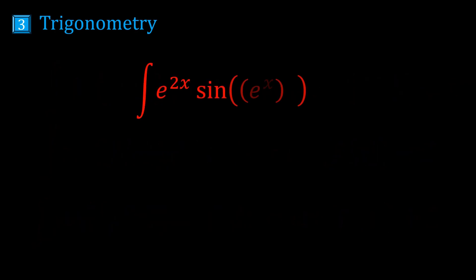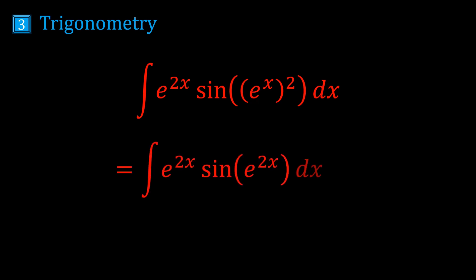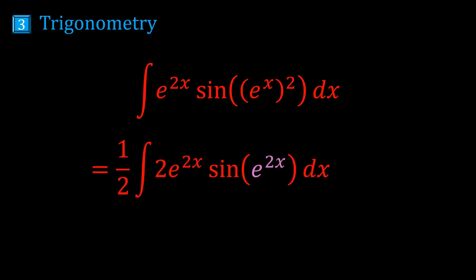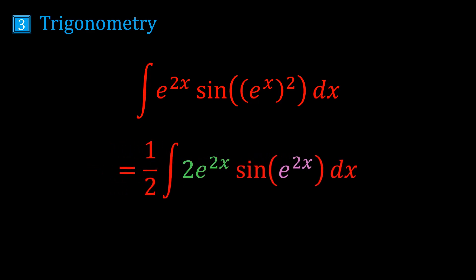For this example, we write e^(2x) rather than e^(x²) — that's just cleaner. We look at the inside function, which is e^(2x), and its derivative is 2e^(2x). We almost have that at the front, so we multiply and divide by 2. Now this is just like integrating sine — which gives minus cos — so the answer is minus ½ cos(e^(2x)).